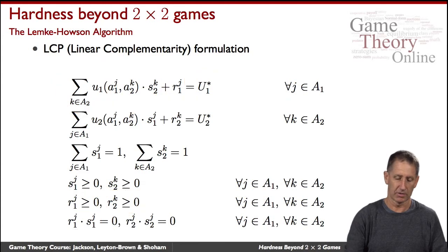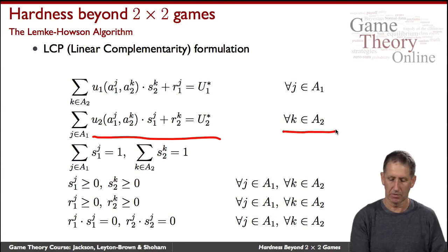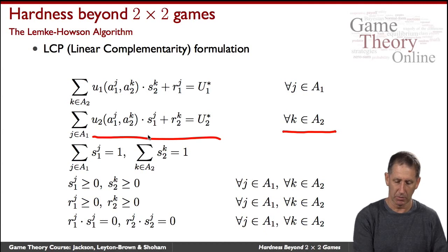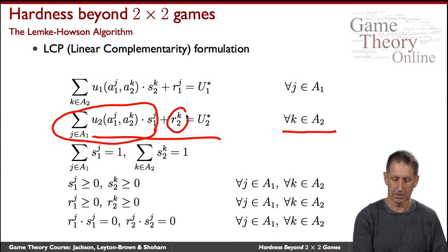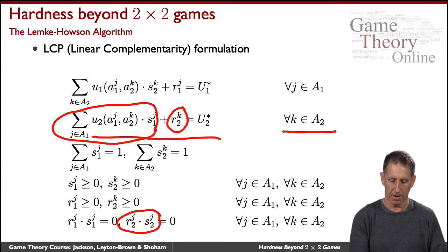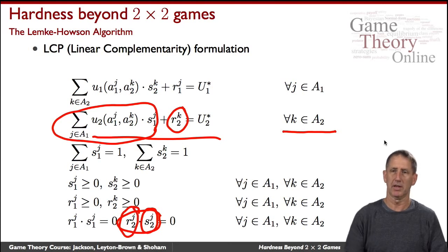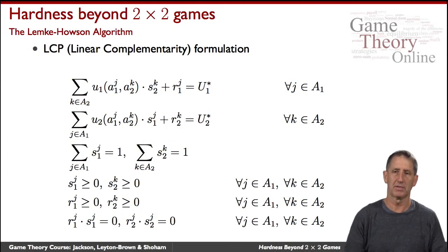Similarly for player two: for each of their actions, if they're going to play it with some probability, we look at their best response given whatever player one is going to play, and we look at the slack variable. Again, we require that their product be zero — in other words, the probability that they play J is non-zero just in case the slack variable is zero. This is the nature of this mathematical optimization program.